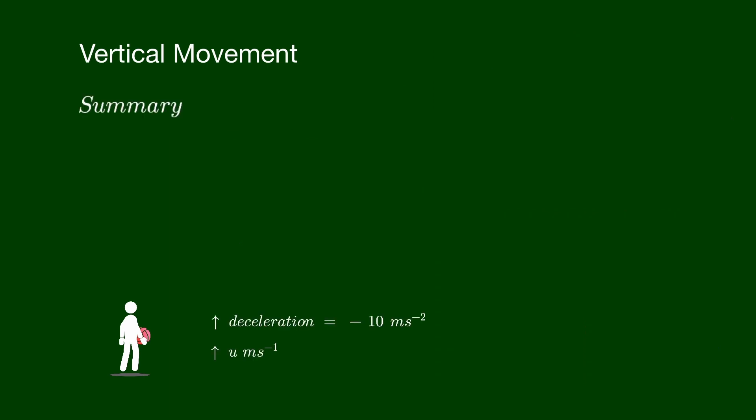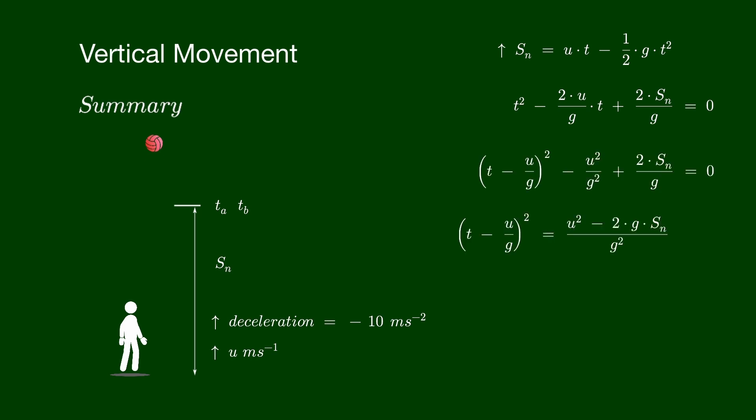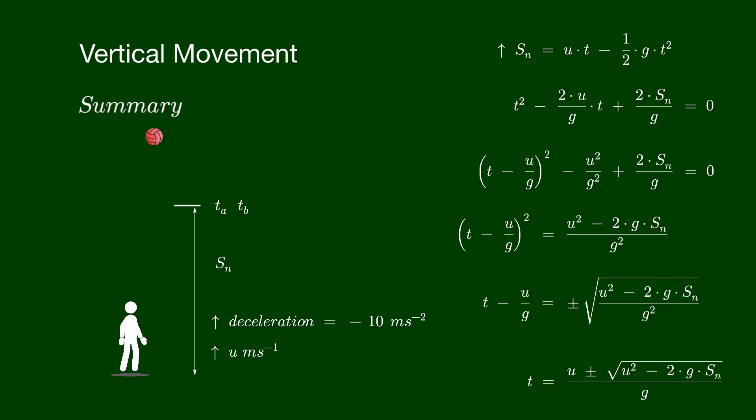To summarize: when a ball is thrown upward at a velocity of u meters per second, gravity causes it to decelerate at a rate of 10 meters per second per second. We can use this kinematic equation to calculate the time corresponding to a given displacement. When you substitute the values you obtain a quadratic equation, which you can solve to determine the two values for time when the ball is ascending and descending.